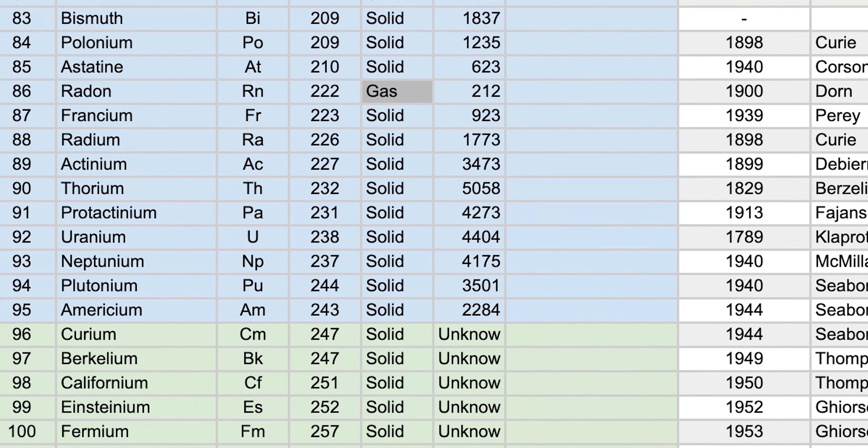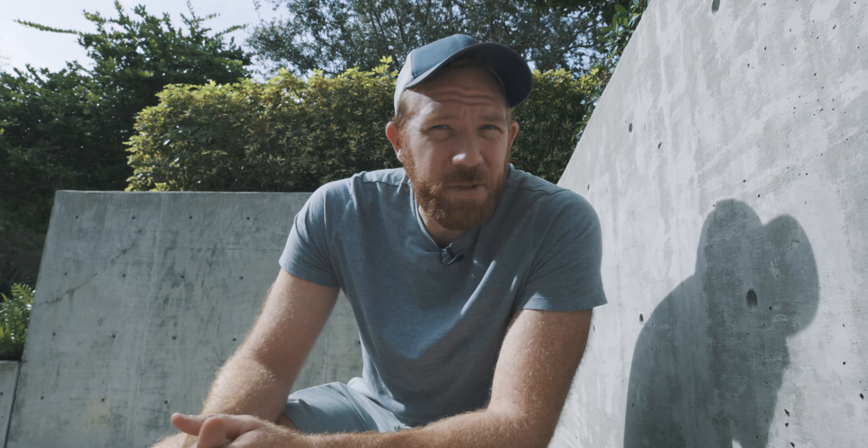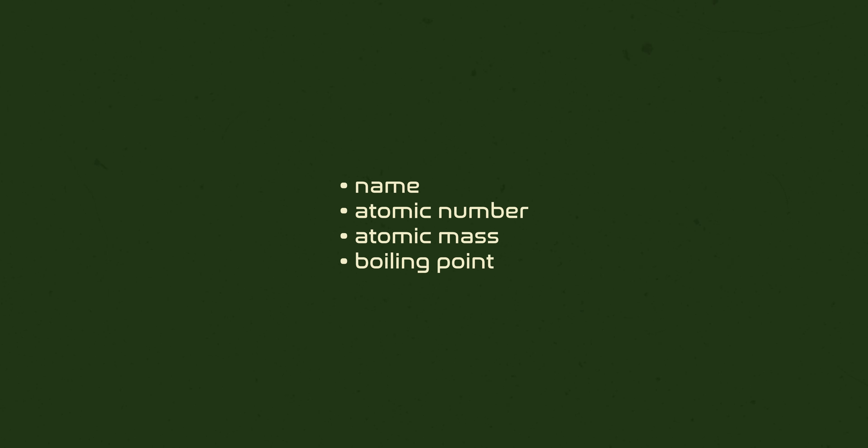Look at the data and see if there are any shortcuts, because you don't need to use a memory palace for everything. The symbols I mostly know already, and a lot of them are intuitive. There are maybe a handful of tricky ones I can just learn separately. As for states — solid, liquid, or gas — it looks like almost all are solid, except two liquids and 11 gases. I can just learn those by repetition. So all I really need to worry about are the name, the atomic number, the atomic mass, the boiling point, and possibly the date and discoverer.